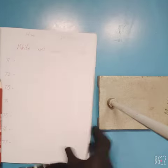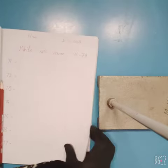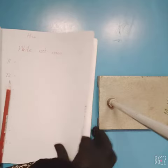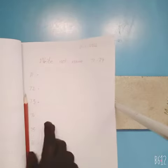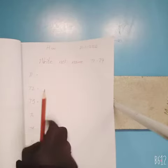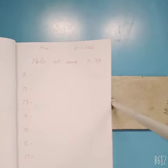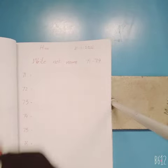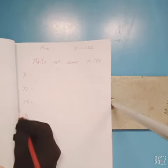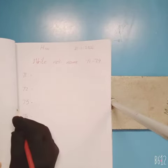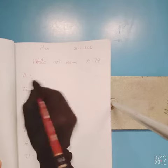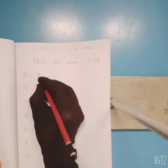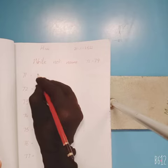Let's learn the spellings of numbers from 71 to 79. Students, firstly revise the spelling of 70: S-E-V-E-N-T-Y, seventy.